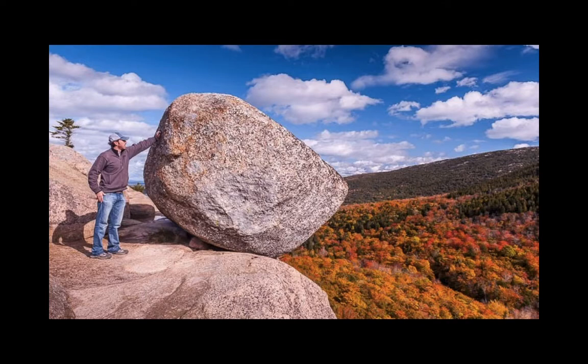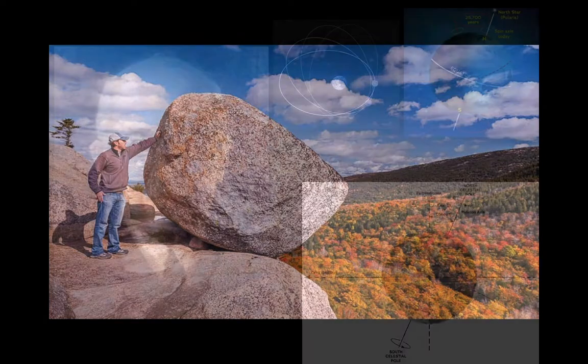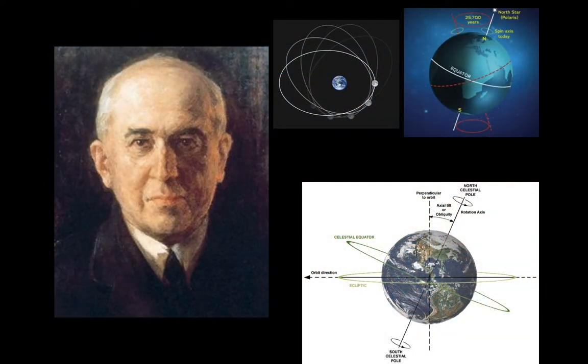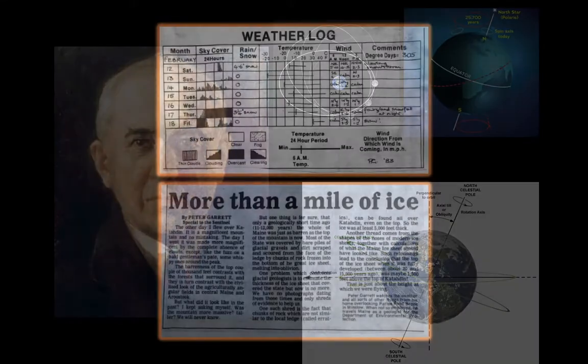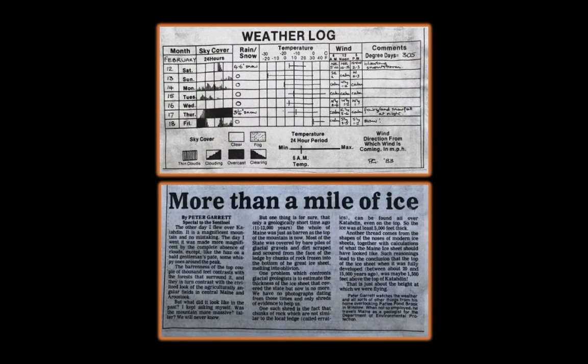And then I came to Maine. This is Bubble Rock on Mount Desert Island — one of many huge boulders moved by an ice sheet across the landscape and dumped. Milutin Milankovic calculated that subtle variations in Earth's orbit around the sun, its axial tilt, and its axial wobble were enough to cause the natural climate changes of the ice ages. What a calculation.